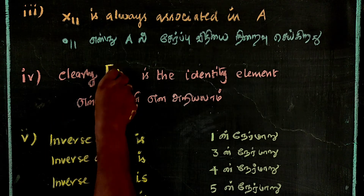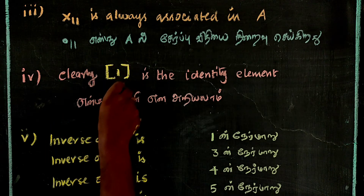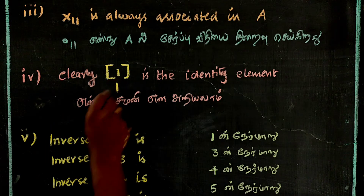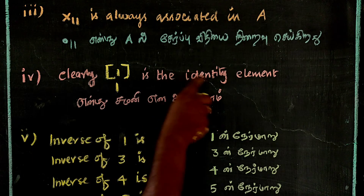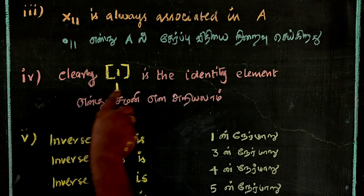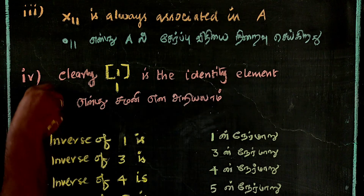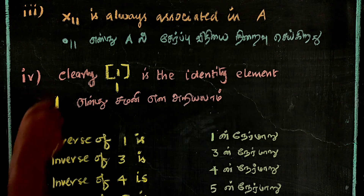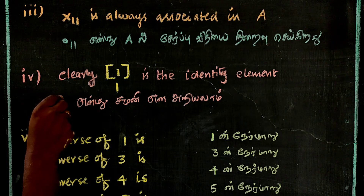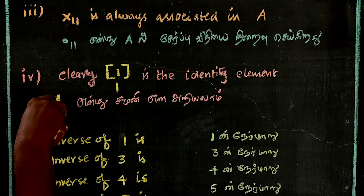From the table, it is clearly seen that 1 is the identity element in A.